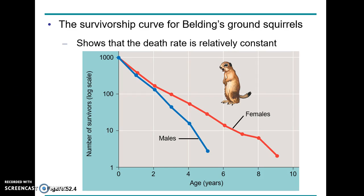Looking at the survivorship graph - assuming all babies are born at zero months, there is a steady decline in the number of organisms that live, and by the time they reach 10 years you can see a sharp drop-off where fitness has reduced. Females live longer than males - males tend to have a sharp drop between four and six years, and at five years old very few of them are left. This graph is on a log scale.